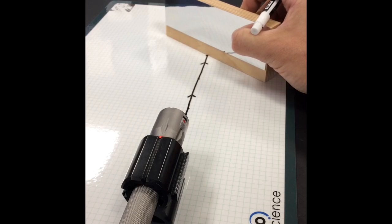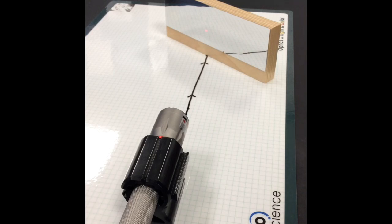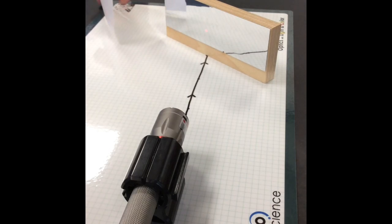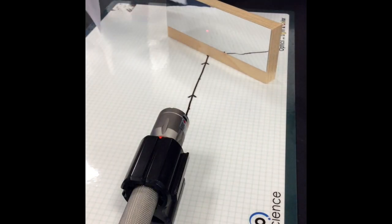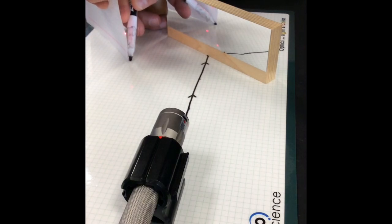Then you're going to look at the outgoing laser beam the same way. You're going to take your 3x5 card, you're going to slide it until it lights up the edge with the laser beam, and you're going to put a dot.